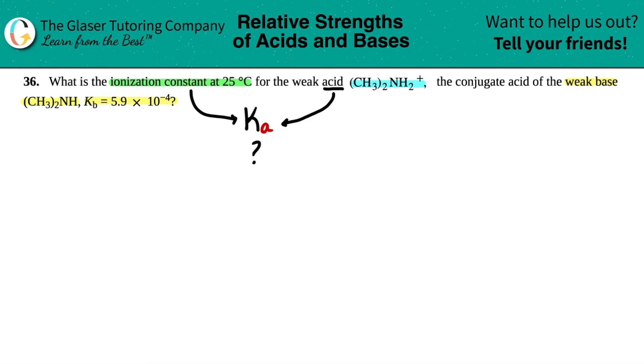Now the only thing that they gave us was a Kb, right? Kb equals 5.9 times 10 to the negative fourth. So I say to myself, okay, I have a Kb value, I'm looking for a Ka. Is there anything that I can do or any formulas that pop into my head that can relate Kb to Ka?